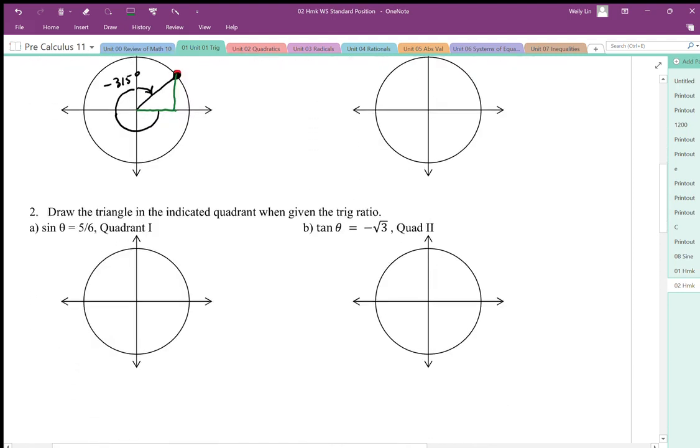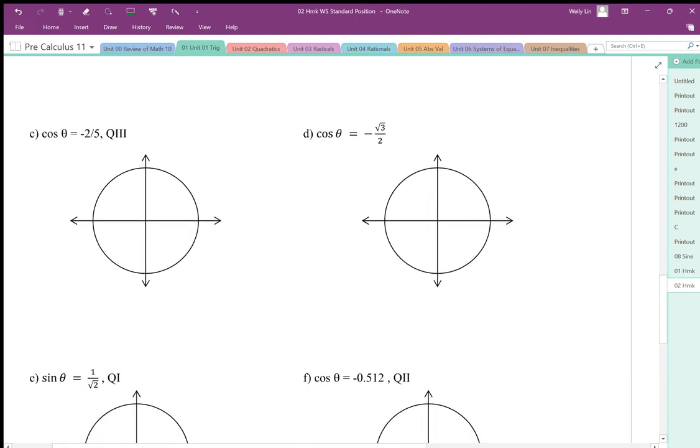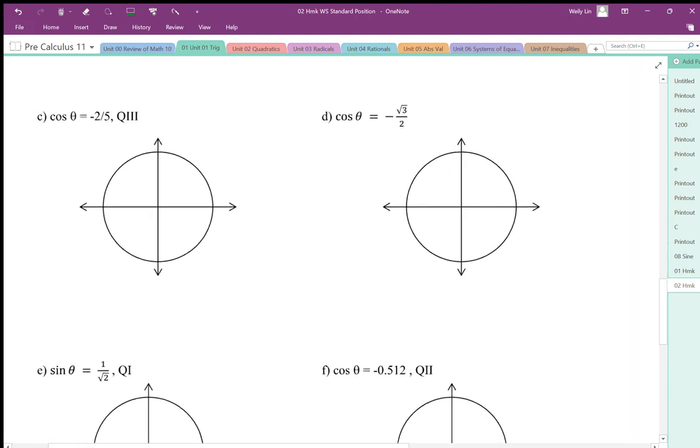That same position can be located using a ratio. This ratio of cosine of negative root 3 over 2. Cosine is the adjacent side over hypotenuse, but we're going to change this to the x position over the radius.